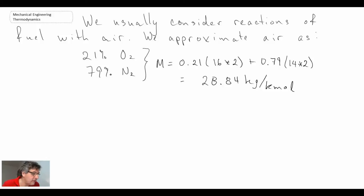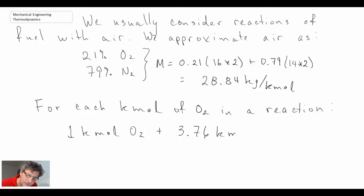That's what we'll be using for the molar mass for air. For each kilomole of oxygen, because remember we're saying that it's an oxidation reaction, so oxygen is combining with the hydrocarbon fuel. For one kilomole of oxygen, we have 3.76 kilomoles of nitrogen for a total of 4.76 kilomoles of air.